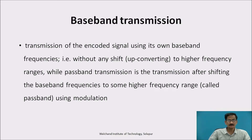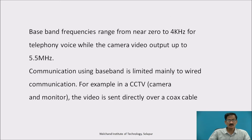Baseband Transmission is the transmission of the encoded signal using its own baseband frequencies, that is without any upconversion to higher frequency ranges. Passband transmission is the transmission after shifting the baseband frequencies to some higher frequency range called passband using modulation. Baseband frequencies range from near 0 to 4 kHz for telephony voice, while camera video output goes up to 5.5 MHz. Communication using baseband is limited mainly to wired communication.